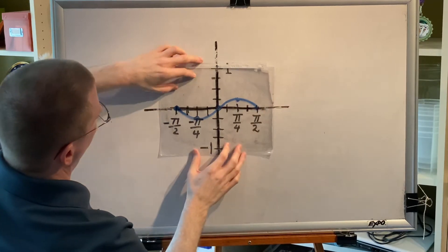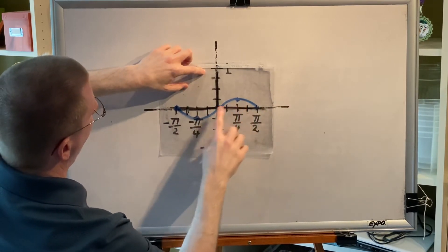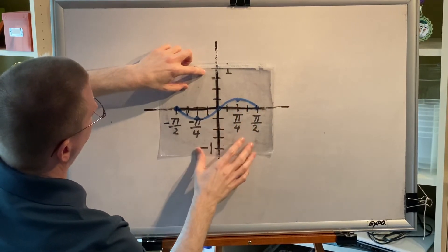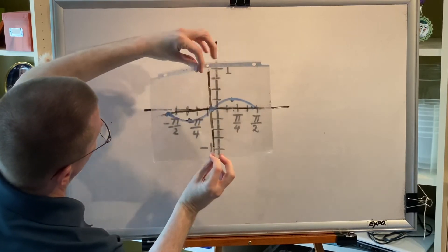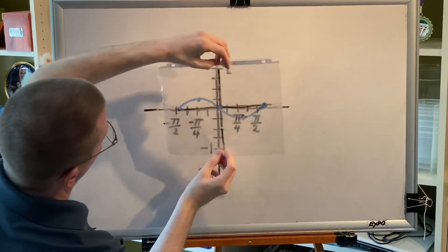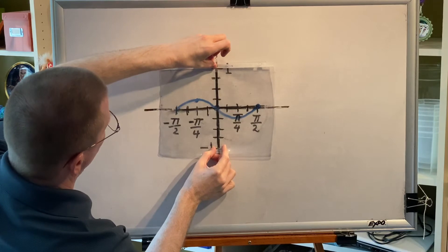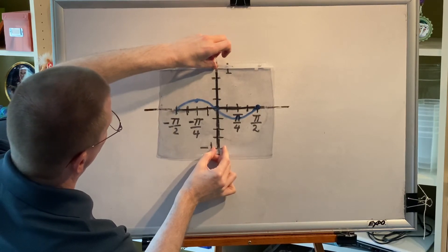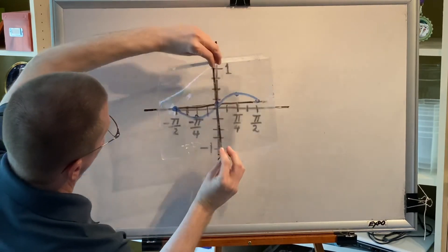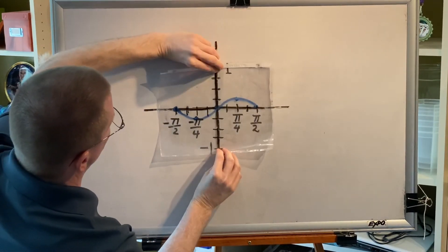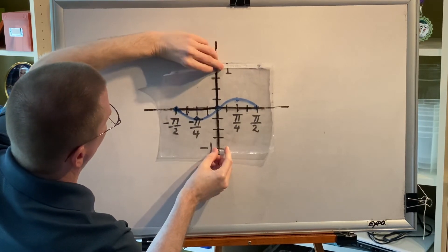Now we'll test for y. The hill is on the right and the valley is on the left. Spin it around the y-axis — and now the picture is different. This is the after; this is the before. There is no y-axis symmetry.